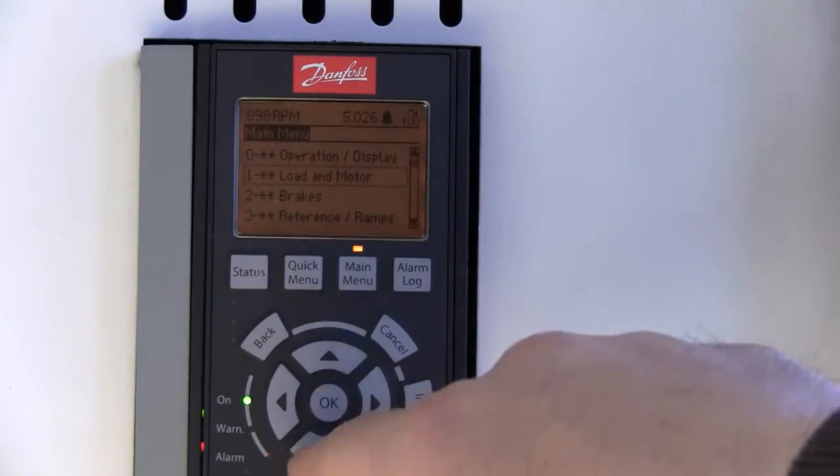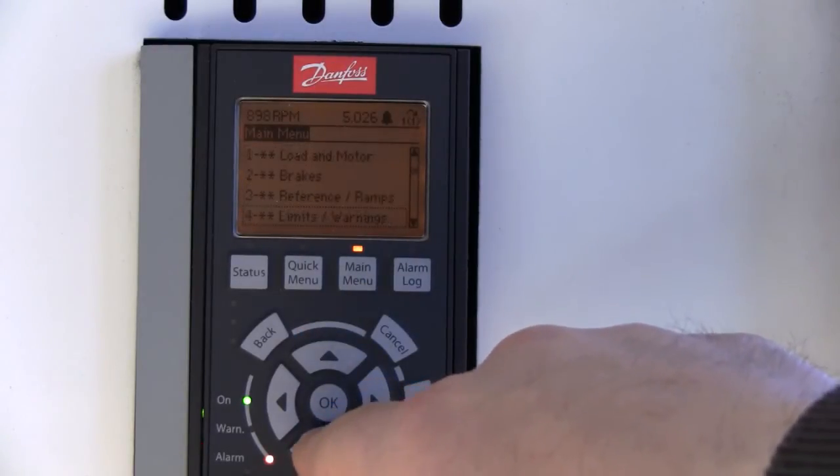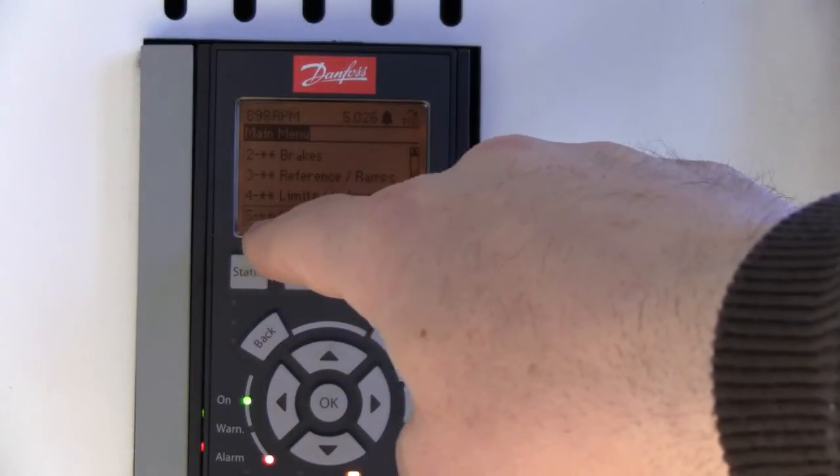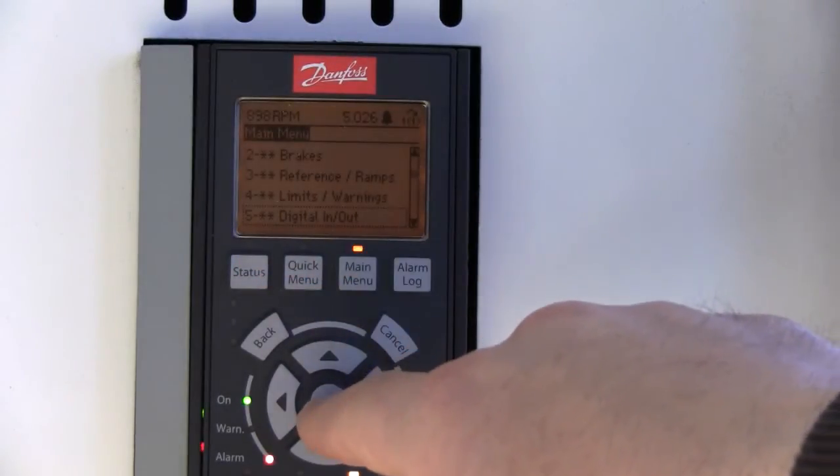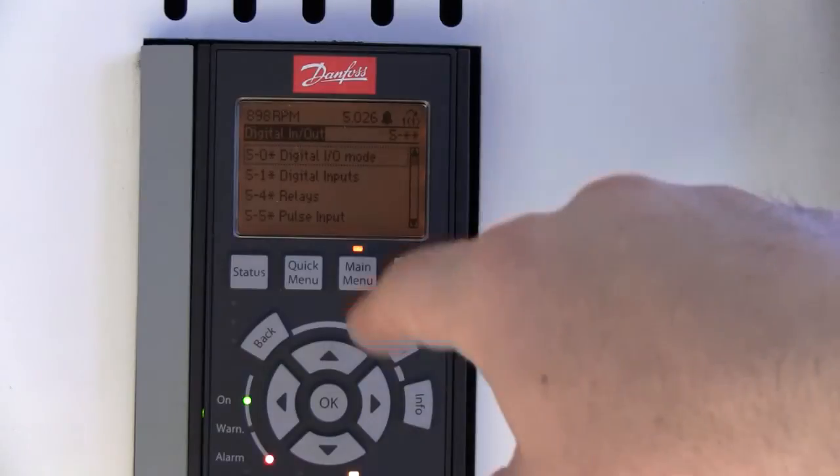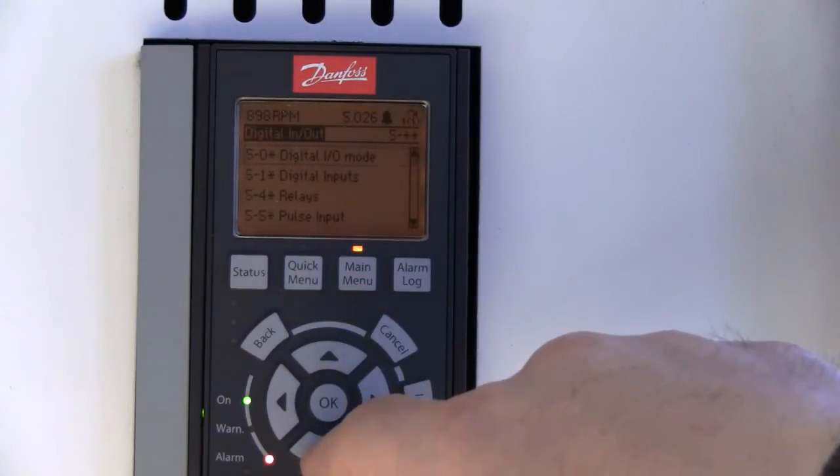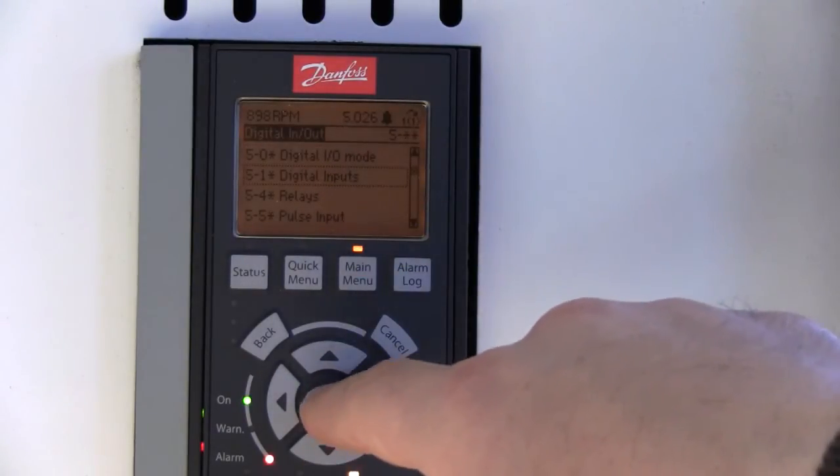Navigate using the up and down arrows. The input is in main group 5, digital inputs. Push your OK button. Push the down arrow until you see digital inputs. It's 5-1. Hit OK.